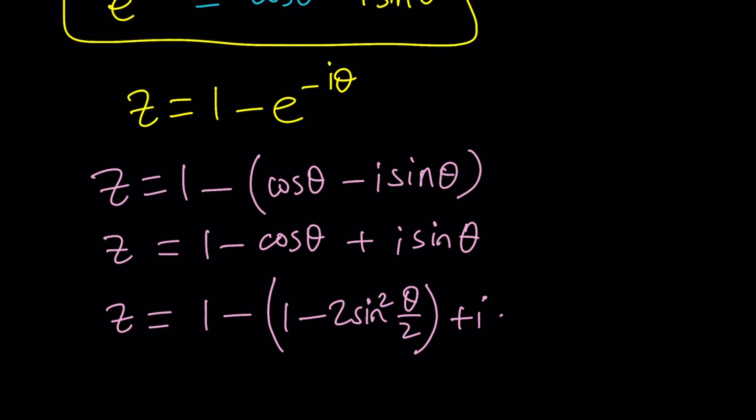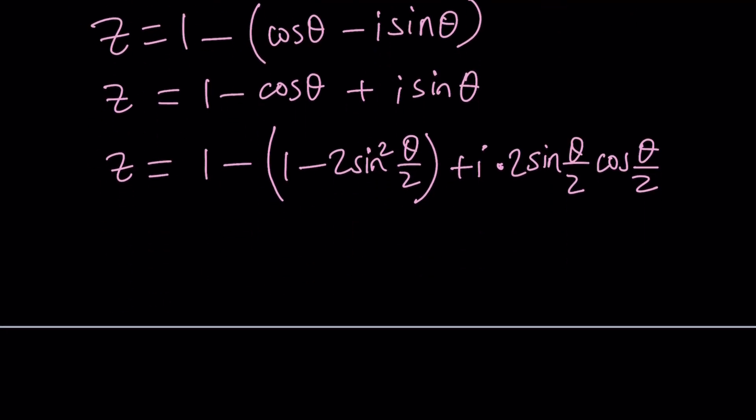And now for the sine theta, I can use the same thing. Treat theta as like 2x. Sine of 2x is 2 sine x cosine x, then replace x with theta over 2. Sine theta can be written as 2 times sine theta over 2 times cosine theta over 2. This is the trick to simplify this expression. When I expand it, 1 minus 1 is going to be 0. And z is going to be 2 sine squared theta over 2 plus 2i sine theta over 2 times cosine theta over 2.